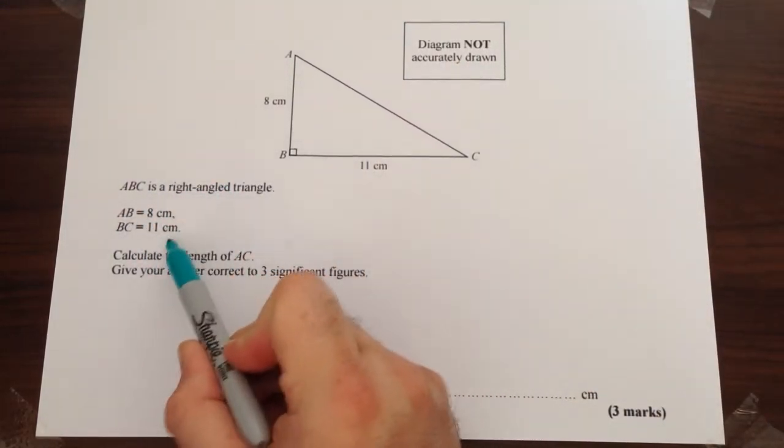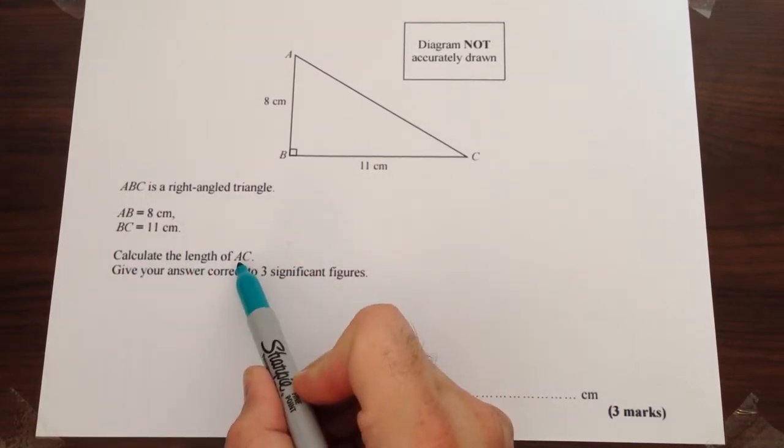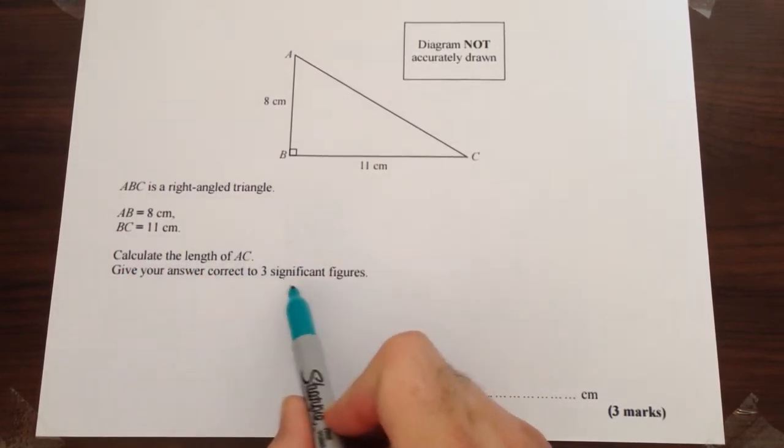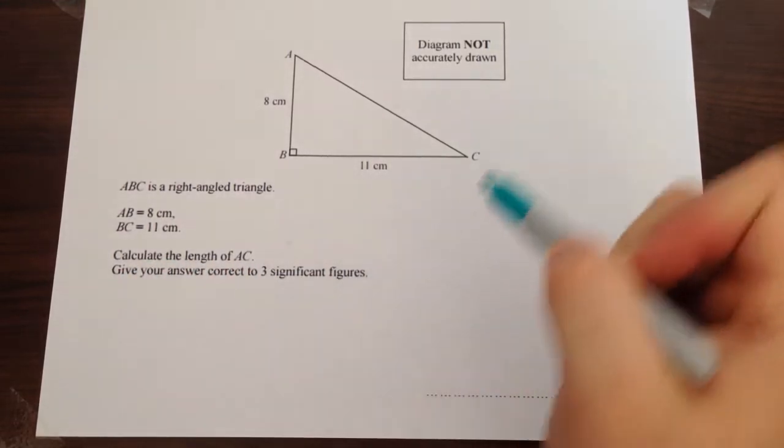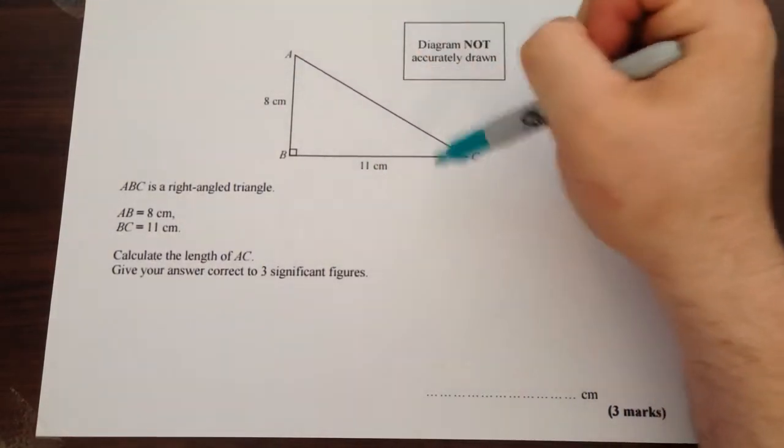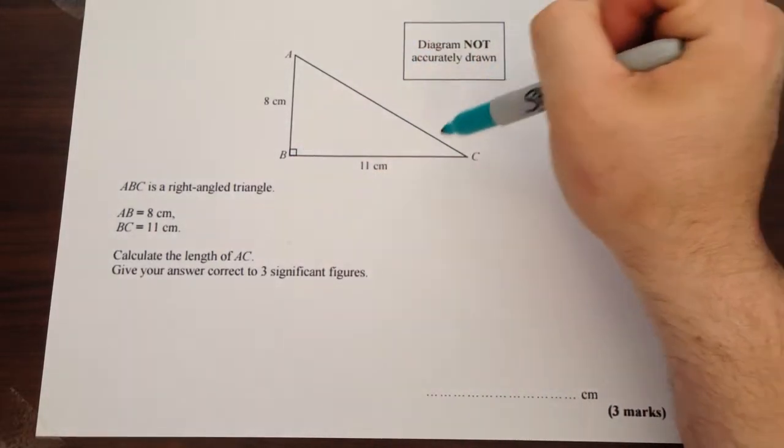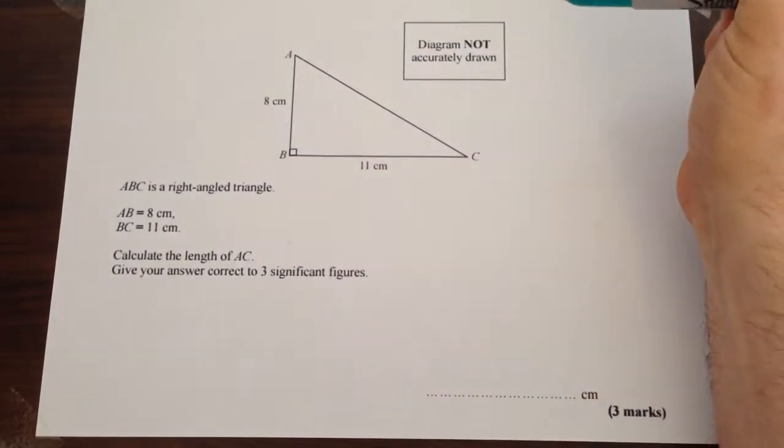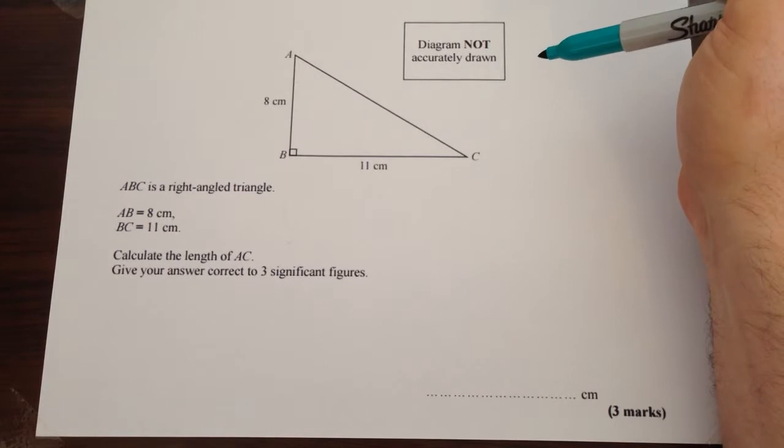Some of this information is summarized here and then we're being asked to calculate the length of AC and give our answer correct to three significant figures. So we're trying to find the length of a side and we know two other sides. There's no angles involved apart from the right angle, we don't know that one or that one, we're not trying to work them out so that should tell us that it's Pythagoras.